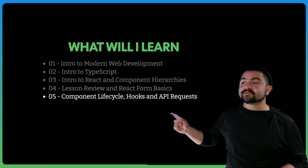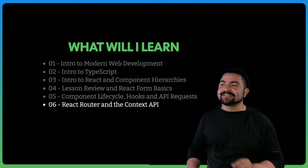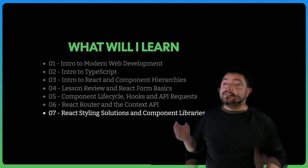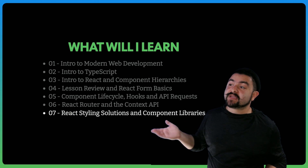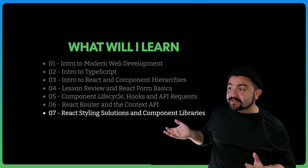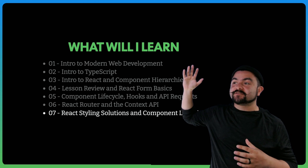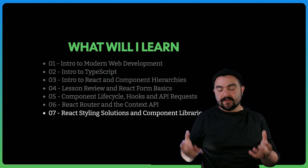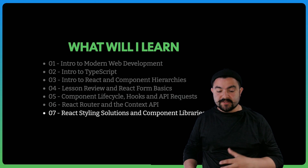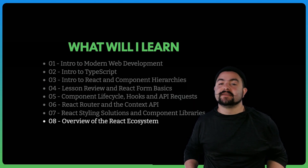Lesson five is all about component lifecycle hooks and API requests. Lesson six is about React Router and the Context API. Lesson seven covers React styling solutions and component libraries. And then after lesson seven, you'll use everything you've learned and practiced so far to work on a full React app.